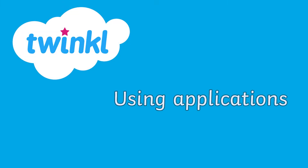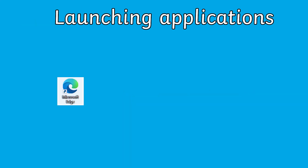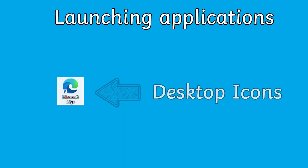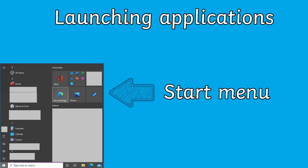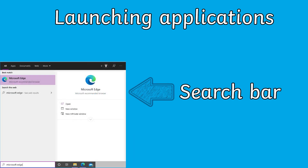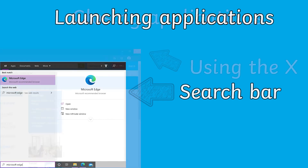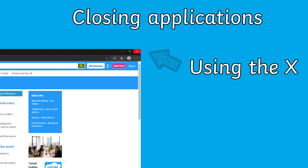Another skill we look at in this unit is using different applications or computer programmes. This includes things like launching an application through a desktop icon, through the start menu, or using the search bar. Closing an application using the X in the top right corner.